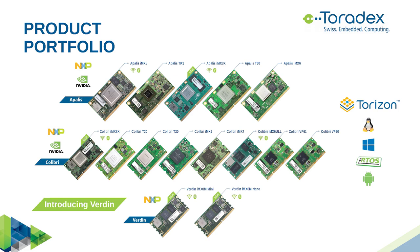Here is a short overview of our products. We have three SOM families where modules are pin-compatible, so you can scale from i.MX6 over i.MX7 to i.MX8. I would like to highlight the Verdin family, a recent addition to the Toradex portfolio launched a few months ago. Like the other families, Verdin is pin-compatible and scalable. It features Wi-Fi, Bluetooth, simple or advanced power management, and security features in hardware such as High Assurance Boot, a cryptography acceleration engine, and more. Total power dissipation is up to 5 watts, and Toradex offers long-term availability of 10 years for this product.